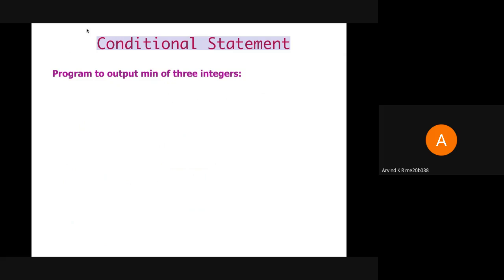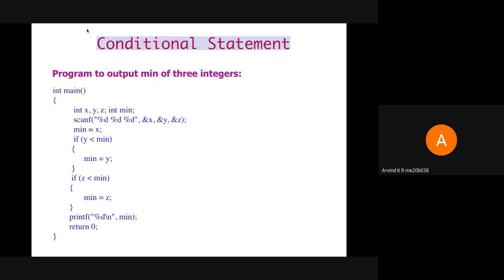Here we have a program to find the minimum of three integers. The idea is to first input the three integers, consider the first integer as minimum, then compare it with the other two and update the value of min. We scan in the value of x, y, and z. We set minimum equal to x, and we have two if conditions. If y is lesser than min, we make min equal to y. In the next if, if z is lesser than min, we make min equal to z. Finally, we print the value of min.